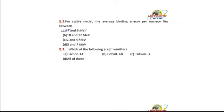Now our next question is, which of the following are beta emitters? Carbon-14 has more neutrons than protons, so the ratio is not 1, it is greater than 1. So it is a beta emitter.